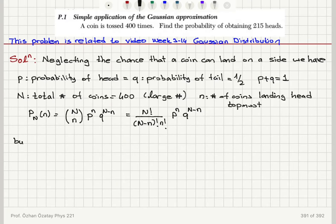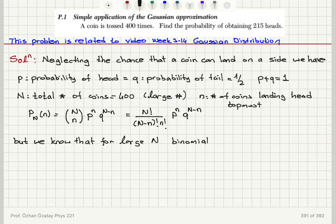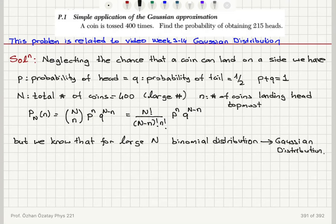But as we have shown in the video on Week 3 — the Gaussian distribution — we know that for large N the binomial distribution can be approximated with a Gaussian distribution. So the binomial distribution becomes a Gaussian distribution for large N.